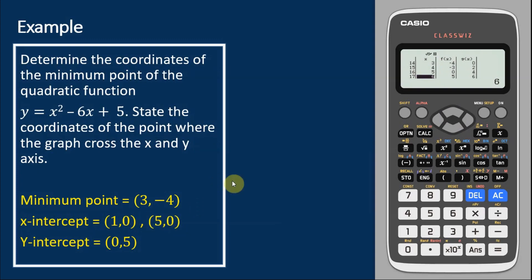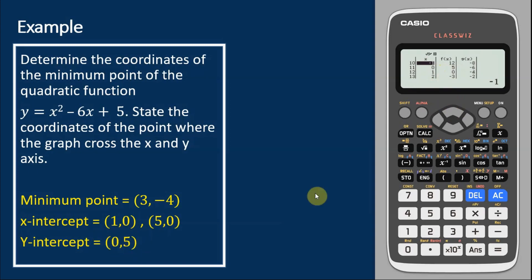At the x-intercept, y = 0, and at the y-intercept, x = 0. So let's check when x = 0: our y = 5, which means the y-intercept is (0, 5). So this is a very handy tool for us to check the minimum point, the x-intercept, and the y-intercept.